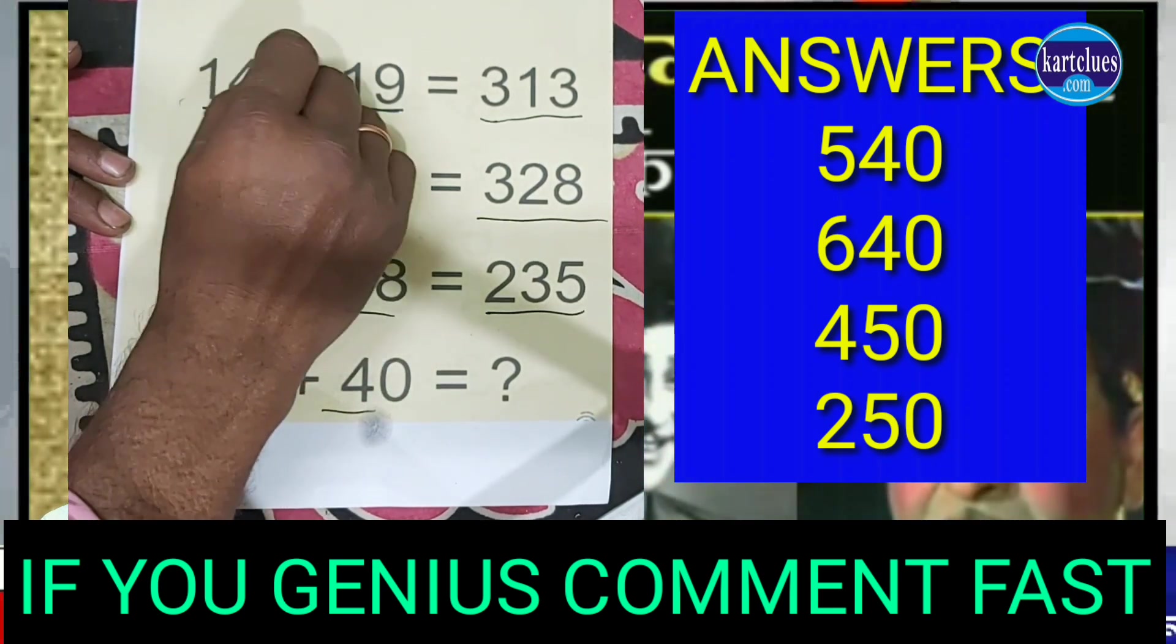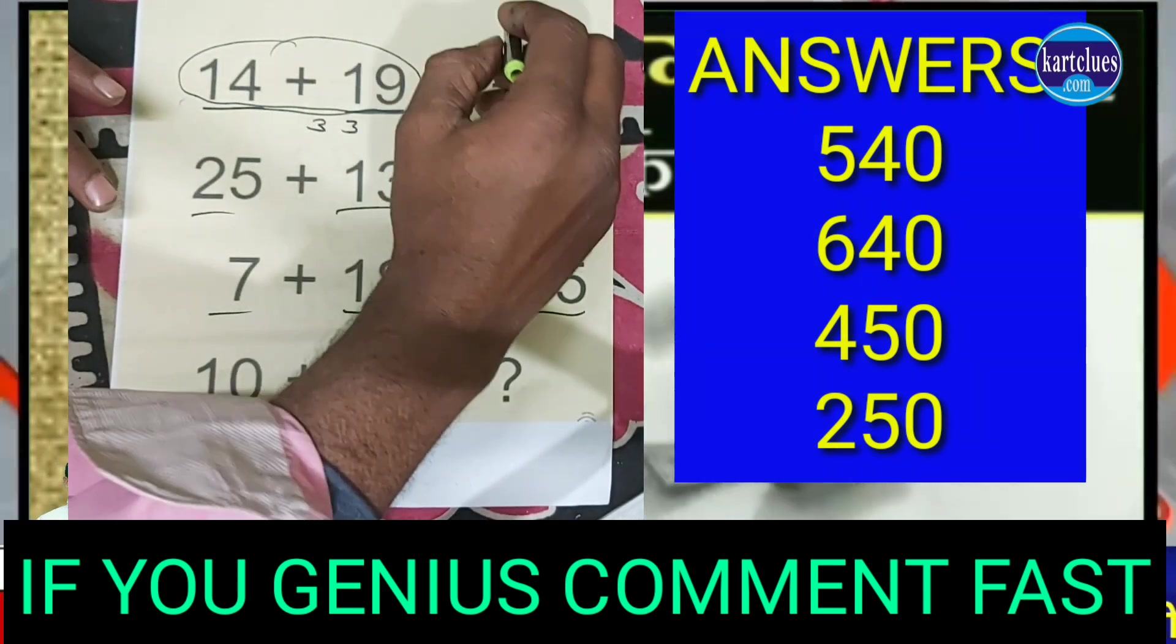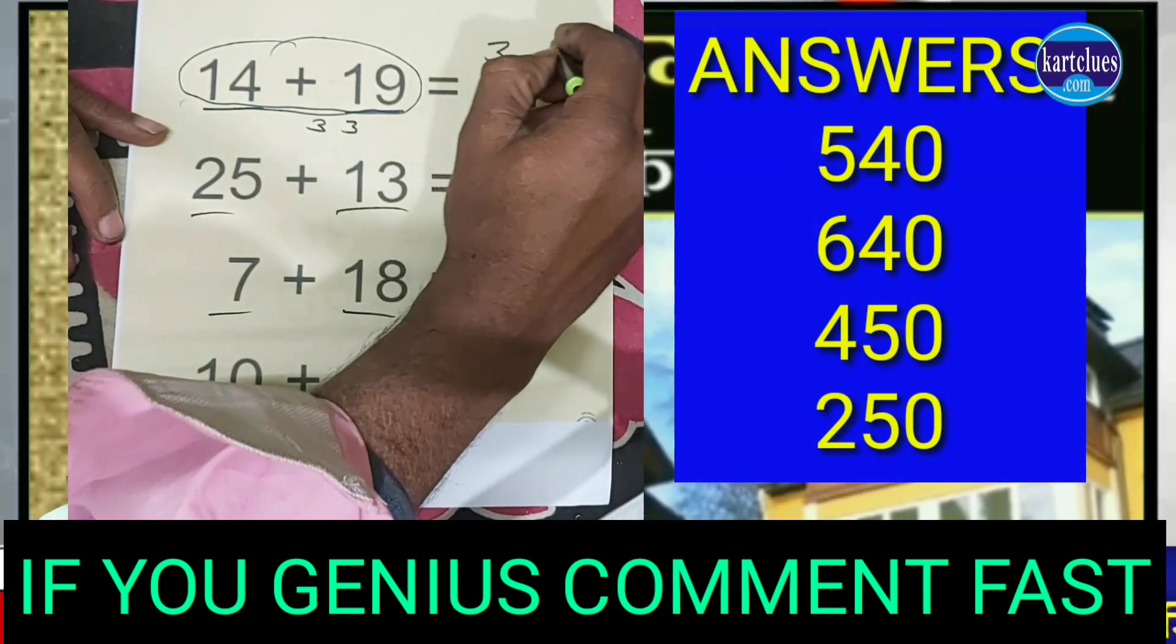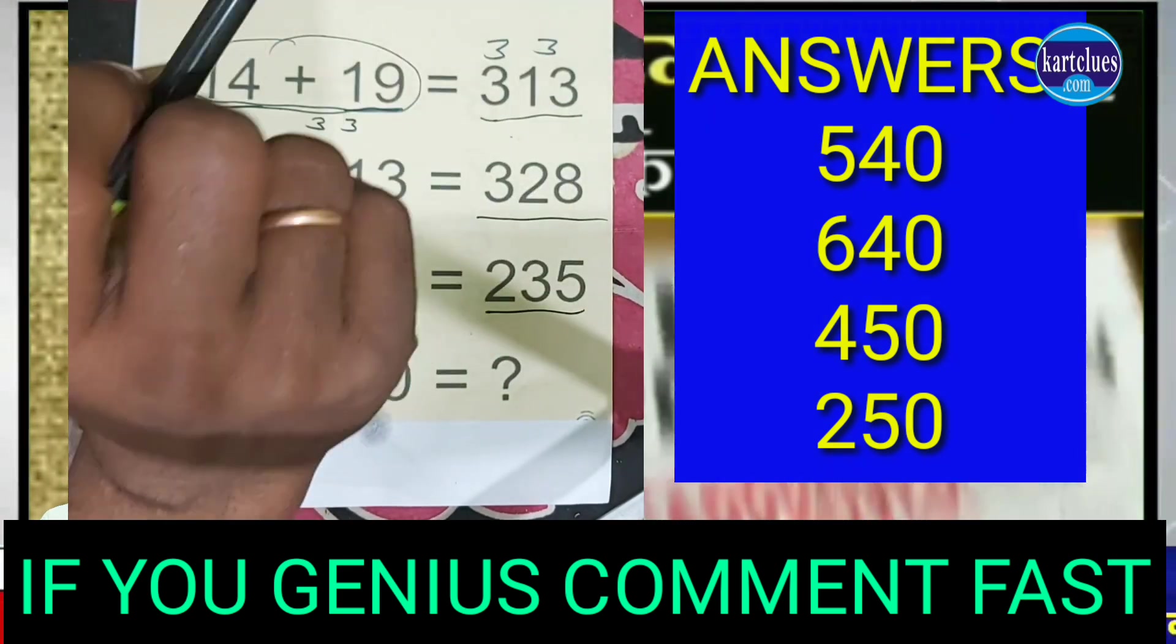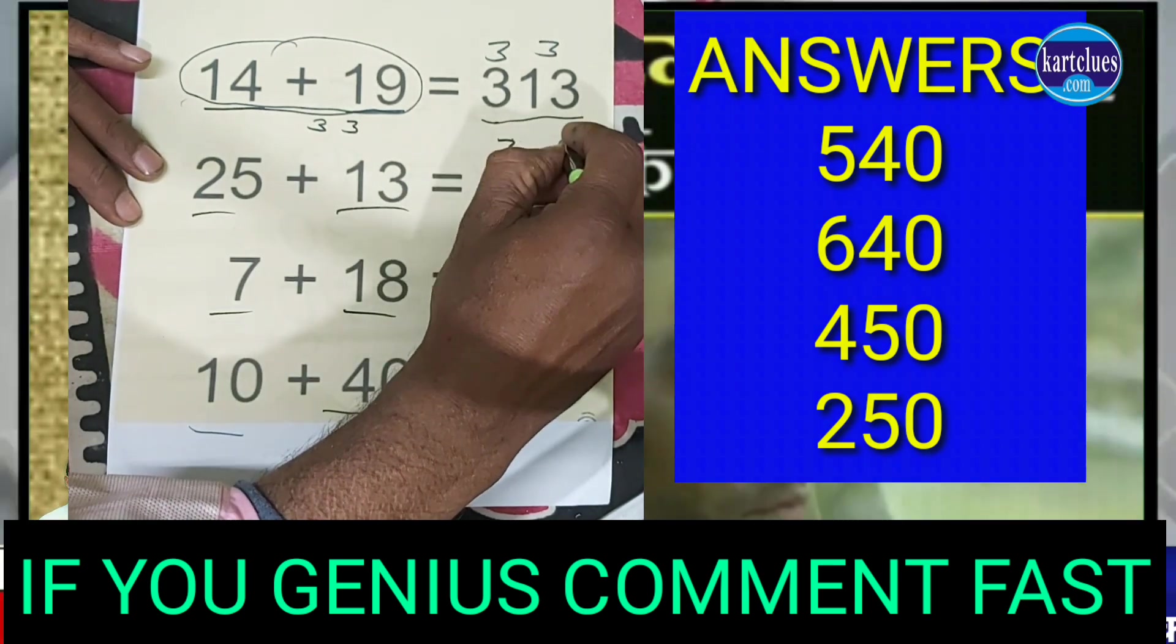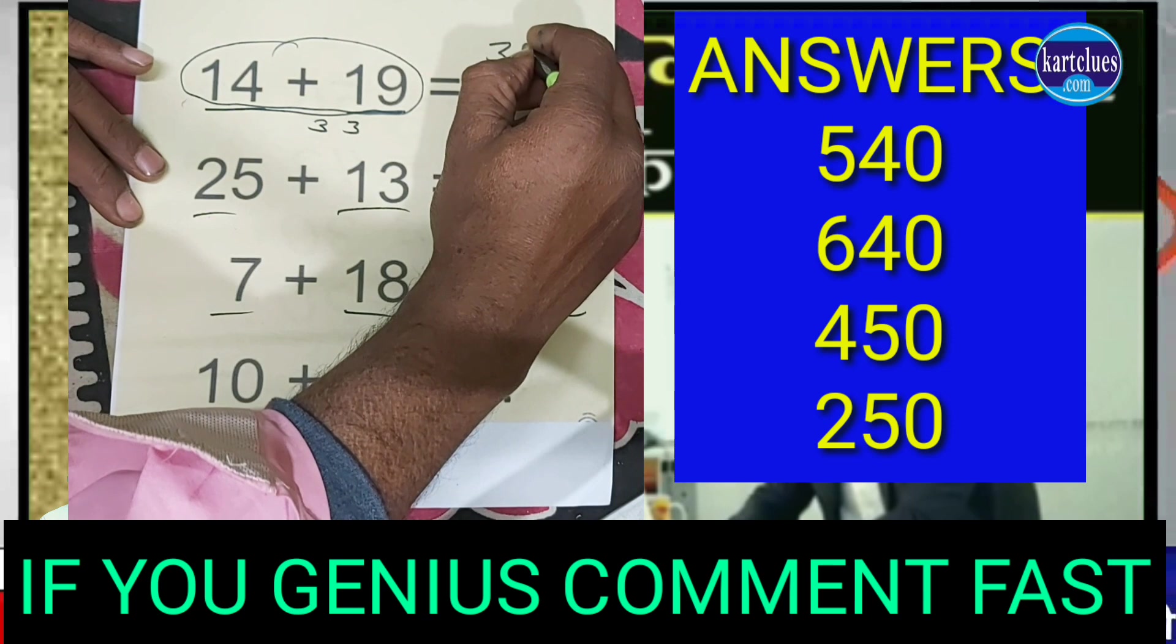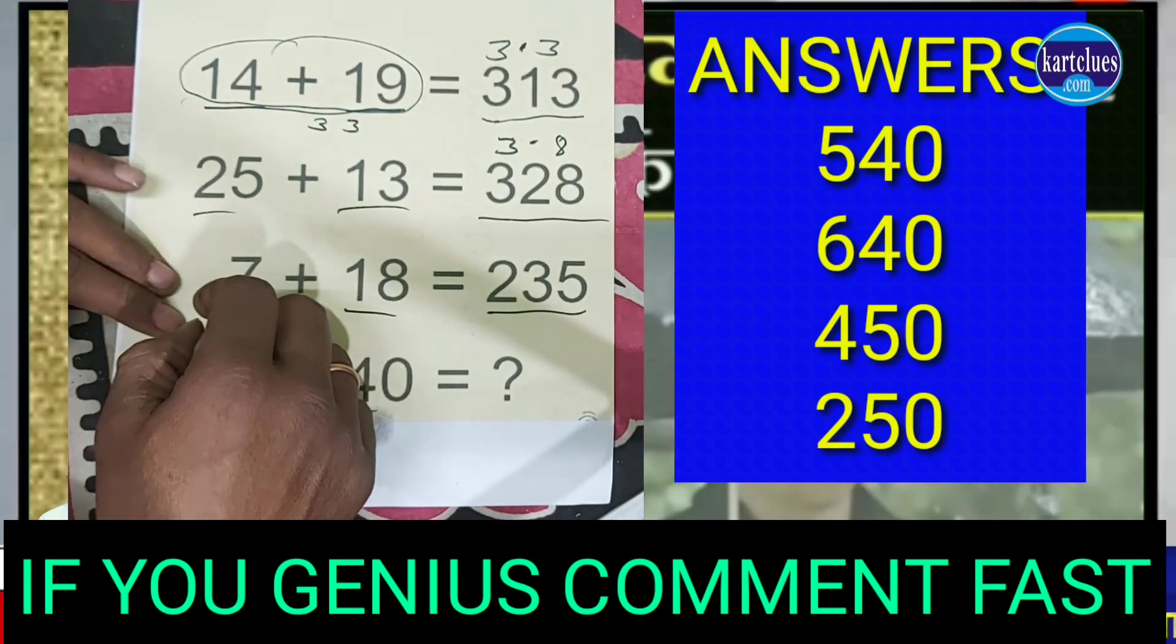you add these two numbers it comes to 33, means you have to write here only 3 and 3. And you have to leave a space in between also. 25 and 13 is equal to 38, you have to write down - just you leave this number vacant, leave this number vacant, and leave this number also. And when you